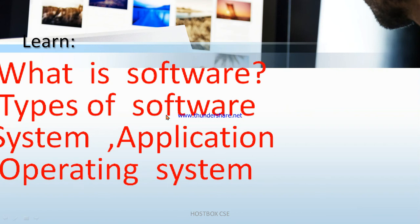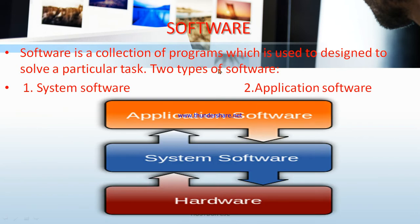Software is a collection of programs designed to solve a particular task. There are two types of software: system software and application software. Here is a schematic diagram representation showing hardware, system software, and application software.